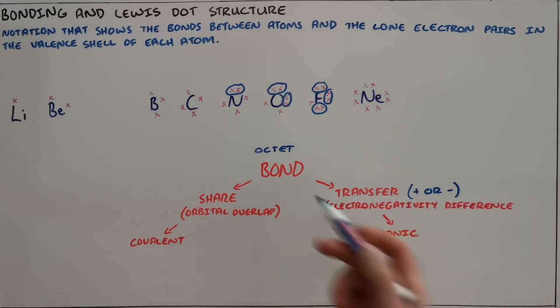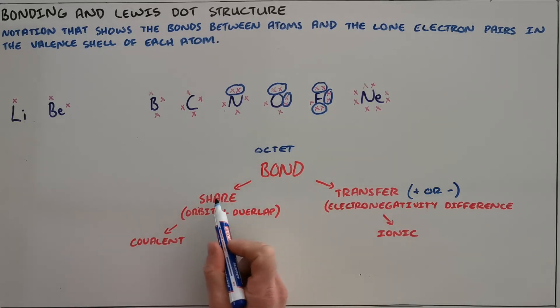And so what we find is there are two types of bonds that can form. The first is a bond that forms when electrons are shared, when the orbitals of those two atoms overlap, and that is called a covalent bond.